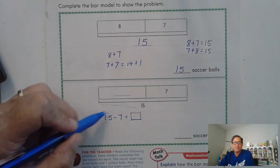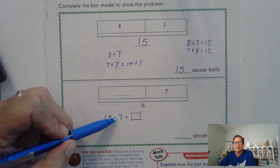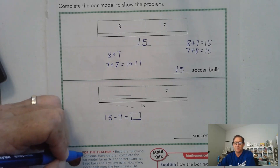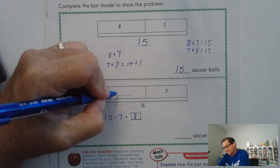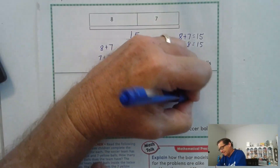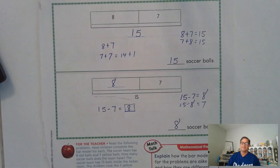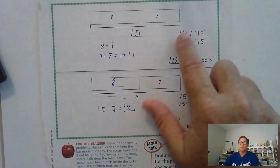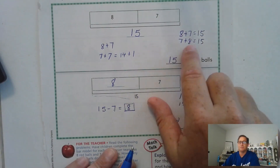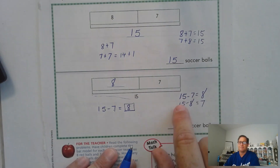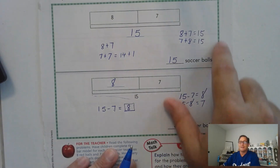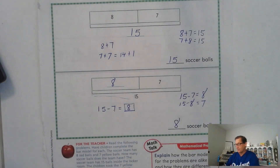What addition fact could we use that's related to this? We know that seven plus eight is 15. So 15 minus seven is eight, and we could say 15 minus seven equals eight. The other related fact is 15 minus eight is seven. So what do you notice about these two problems? Eight plus seven equals 15, seven plus eight equals 15, 15 minus seven equals eight, 15 minus eight equals seven. It's all the same digits — that's how they're related.